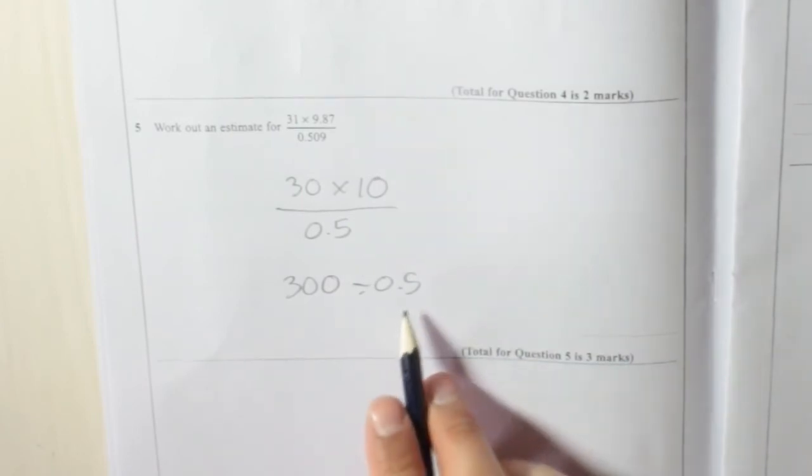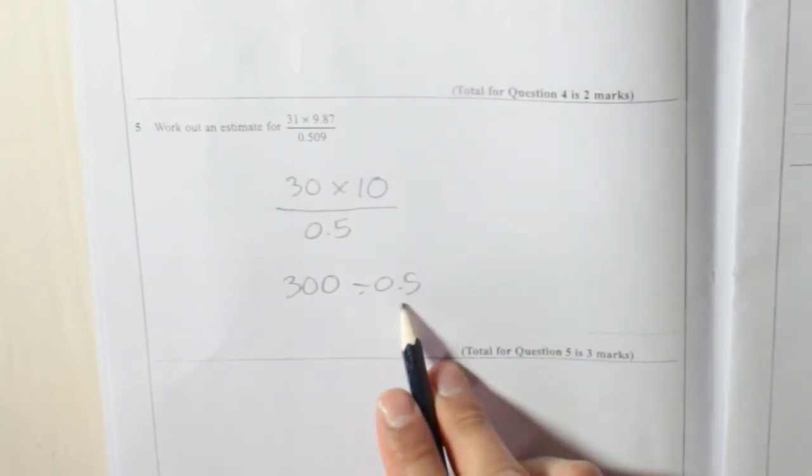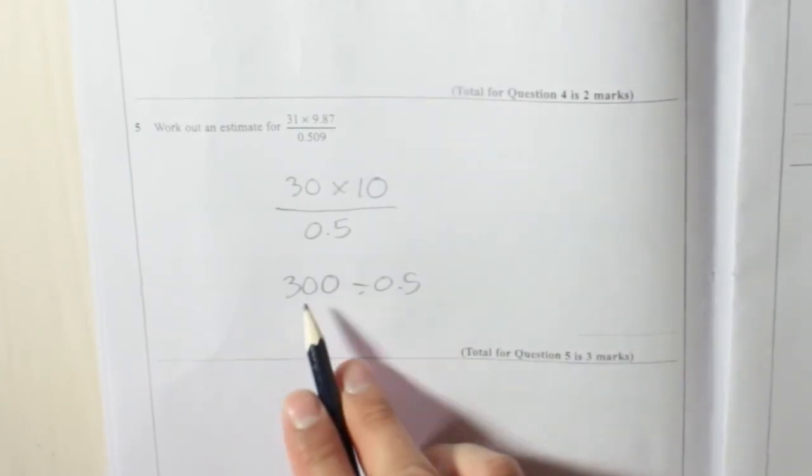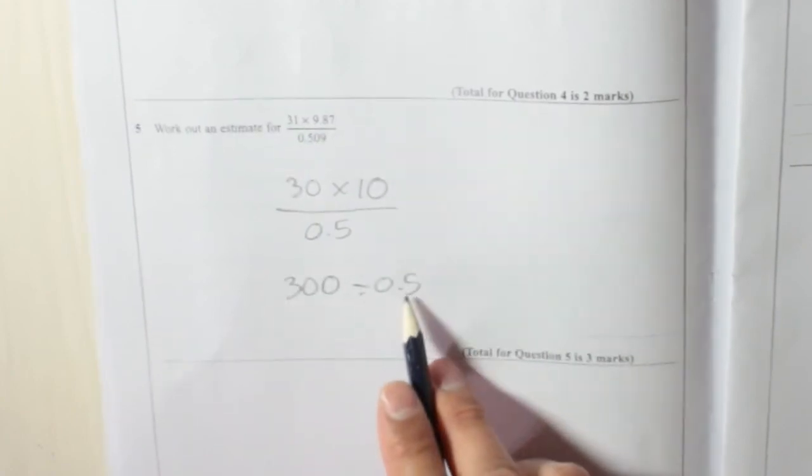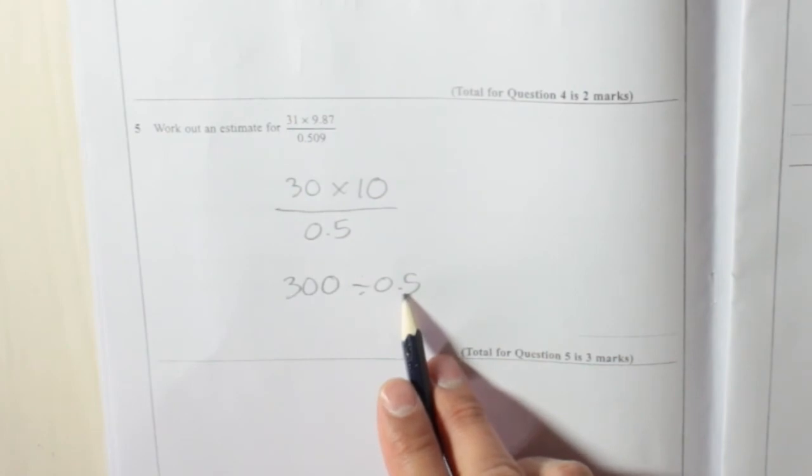Now, when you're dividing by 0.5, it's the same as timesing by 2, because for every 1 in there, 2 of those will fit inside.